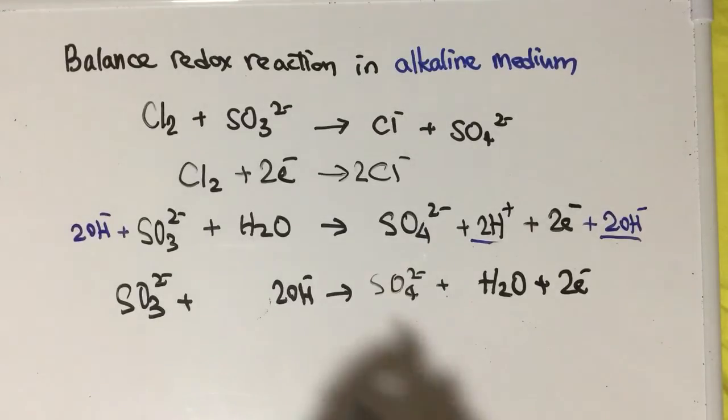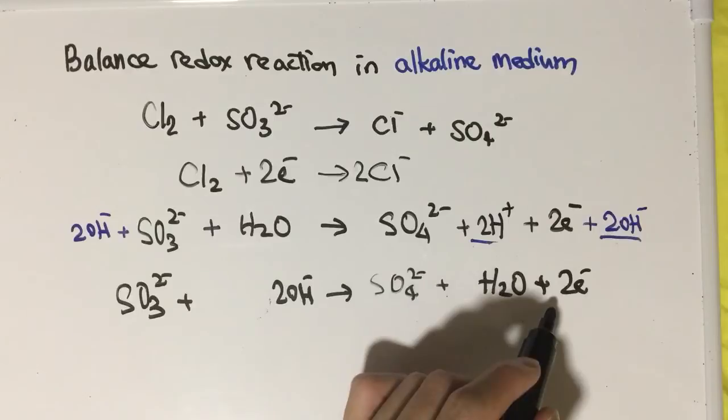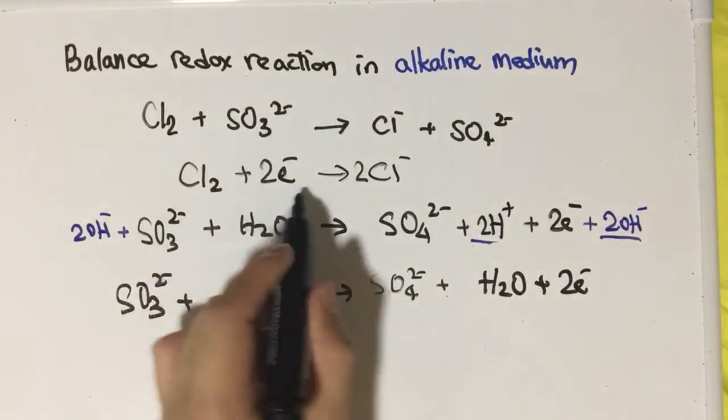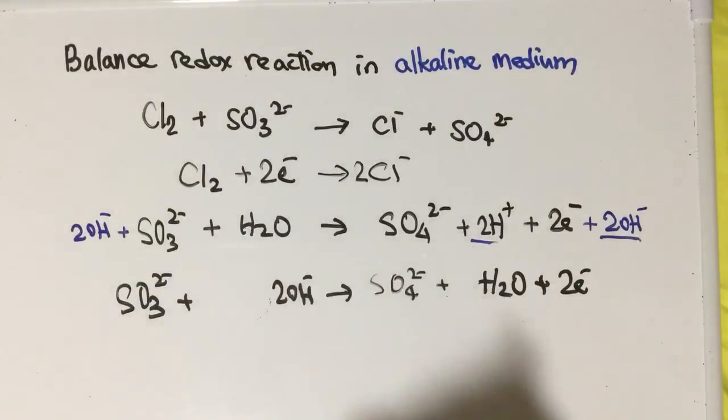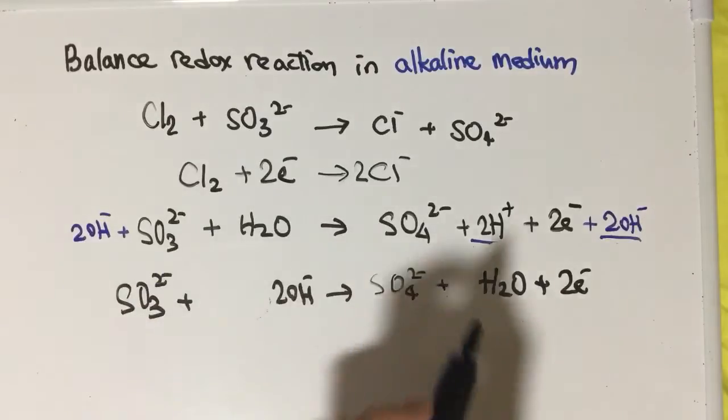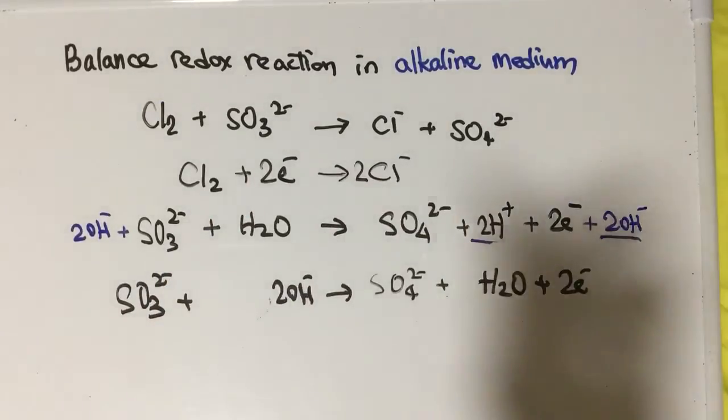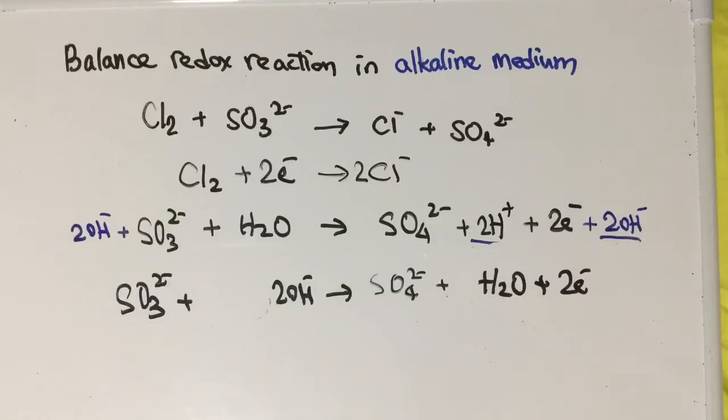Both have two electrons, so this is reduction and this is oxidation. You combine them: this one times one, this one times one, because the electrons balance. If you're not sure how to combine redox reactions, you can see my previous video.